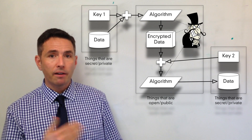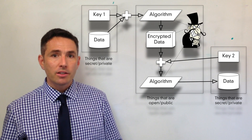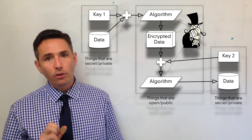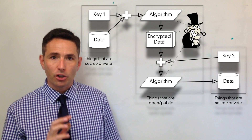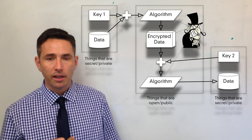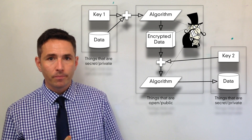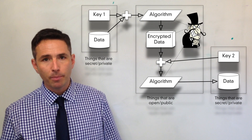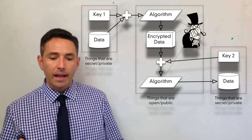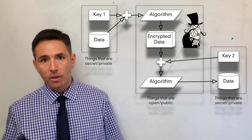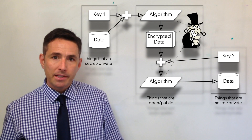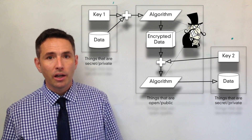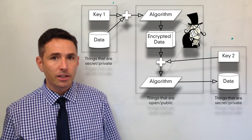The way we do this is we modify our symmetric key scenario so that our private data is encrypted with key one. We use a publicly available algorithm, encrypt our data with key one, and put it on the internet. Then using that same algorithm in reverse with key two, we allow our recipient to receive the original data. The problem is this hasn't actually solved our key distribution problem — how do we get key two to our recipient, or key one to our sender? It's still a problem.